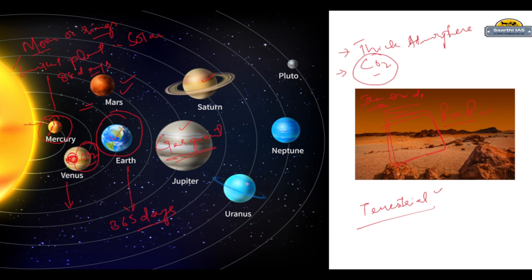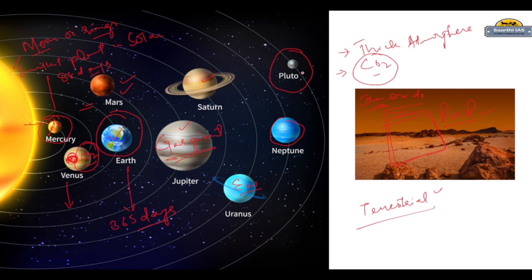Regarding Uranus, we also see some rings around it, and it rotates in the east-to-west direction, while Earth rotates west to east. Uranus is the coldest planet in the solar system. The farthest planet from the sun is Neptune, which is the most distant planet in the solar system. Pluto is not considered a full planet — it is a dwarf planet because its size is very much smaller in comparison to other planets.